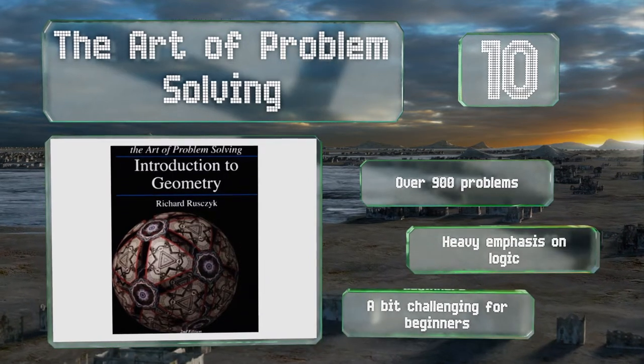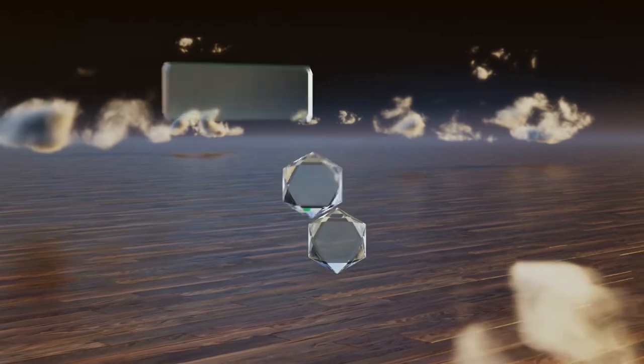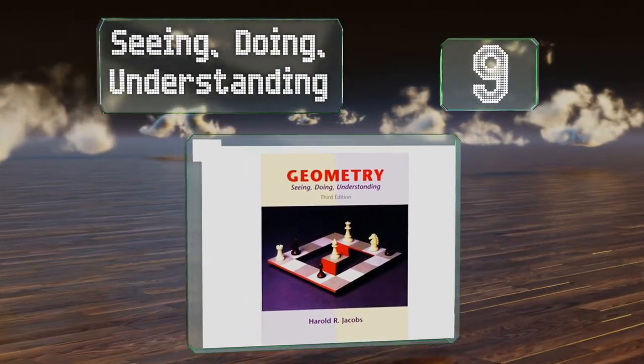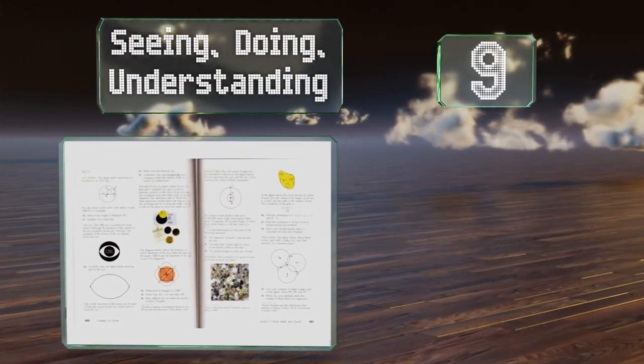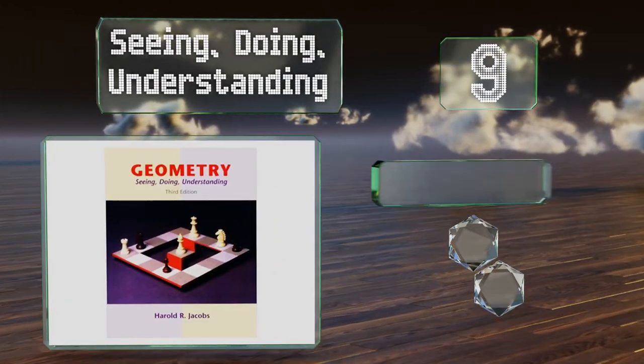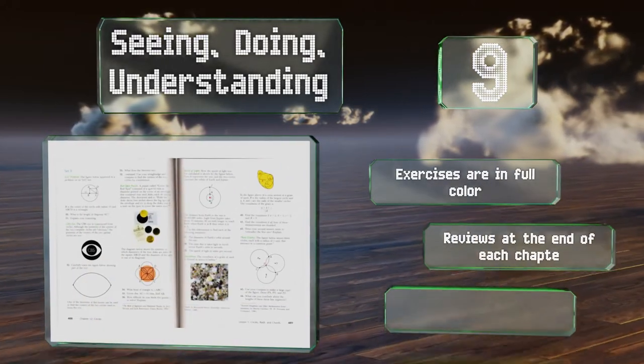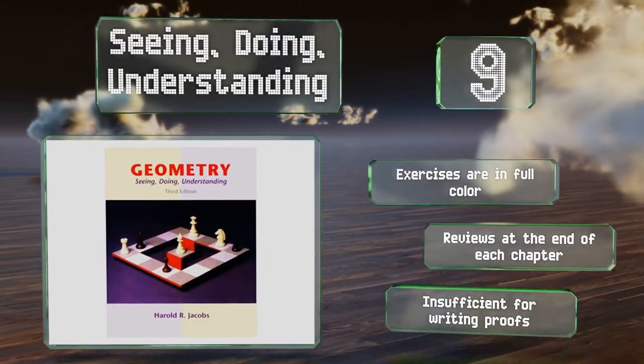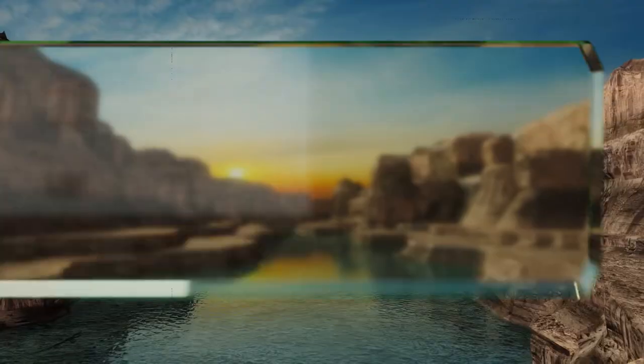At number nine, Seeing Doing Understanding is one of the best texts for helping high schoolers relate to mathematics as the language is engaging and often humorous. It places a heavy emphasis on learning through drawing, so expect to use your compass and protractor. The exercises are in full color and there are reviews at the end of each chapter, but it's insufficient for writing proofs.